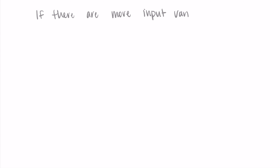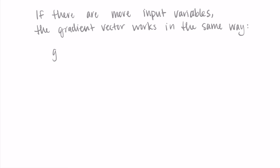If there are more input variables, the gradient vector still works the same way — you can do this with as many input variables as you like. For example, if we had g of x, y, and z, then the gradient of g equals the partial derivative with respect to x in the first component, with respect to y in the second, and with respect to z in the third. You just match each variable with its corresponding partial derivative in the same position.